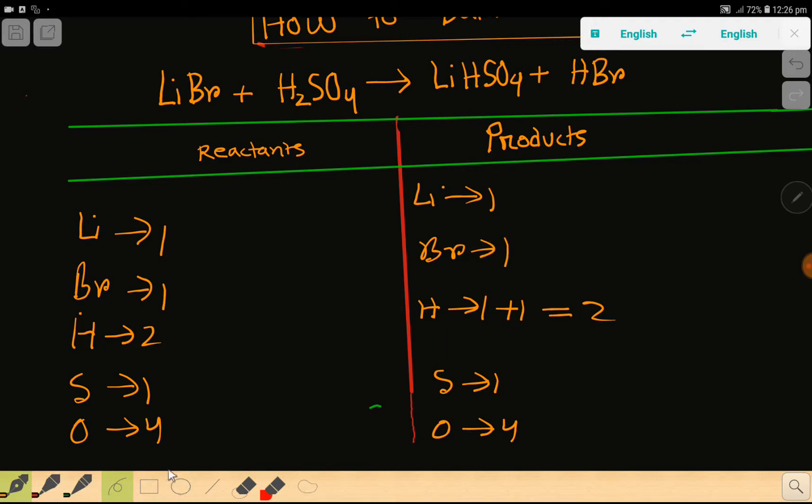Look, to balance this reaction means we have to balance the number of lithium, bromine, hydrogen, sulfur, and oxygen from both sides of this reaction. So here lithium one-one, bromine one-one, hydrogen two-two, sulfur one-one, oxygen four-four. So everything is balanced. You can say that this is the balanced chemical reaction.